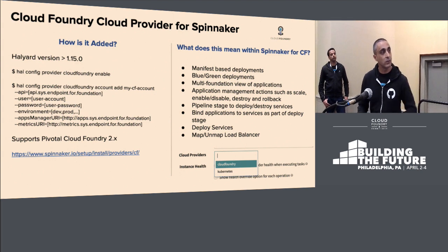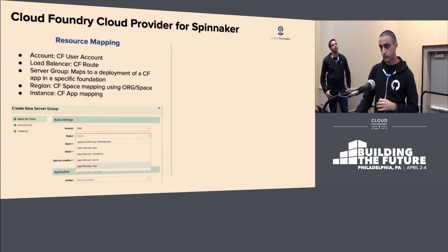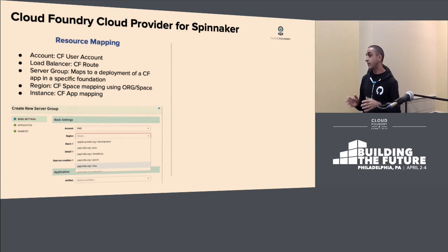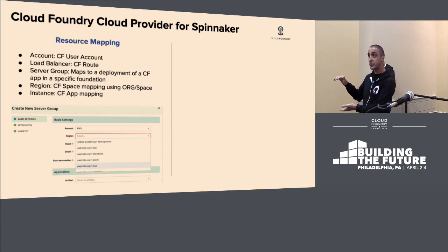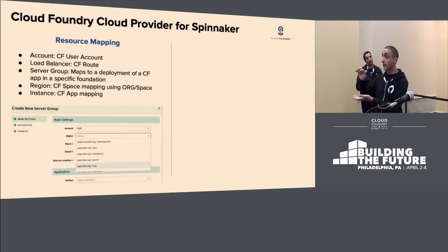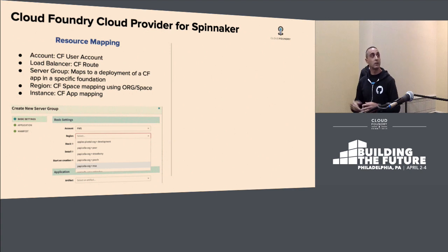Once you've enabled Cloud Foundry, you'll get your cloud provider option at the bottom and be able to select Cloud Foundry when creating a new application. An account in Spinnaker refers to a Cloud Foundry user account — a login to Cloud Foundry, not an org or space. The integration uses the permissions from that account to traverse everything and pull applications into Spinnaker. The load balancer is the Cloud Foundry route, as there's no separate load balancer in CF. A server group maps to the deployment of a specific Cloud Foundry app to a foundation, org, and space. A region is the CF space mapping.